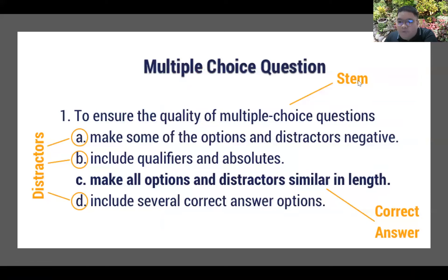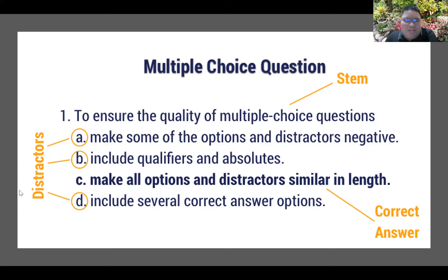When we discuss multiple choice, we say it has three parts. The first is your STEM — the question itself. Then you have your distractors, and then you have your correct answer. The correct answer is obviously the answer that your student would want to pick. Your distractors are the other options or choices which are actually wrong. That's the anatomy, or parts, of your multiple choice questions: the STEM, the distractors, and the correct answer.